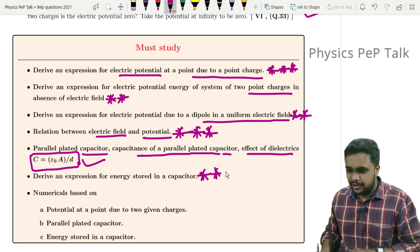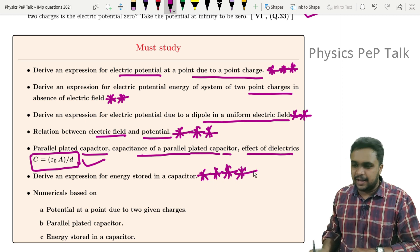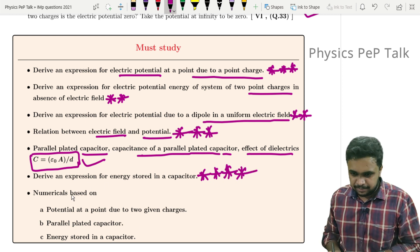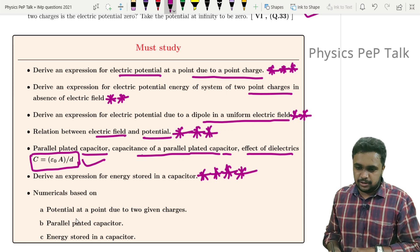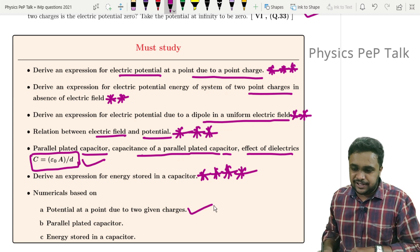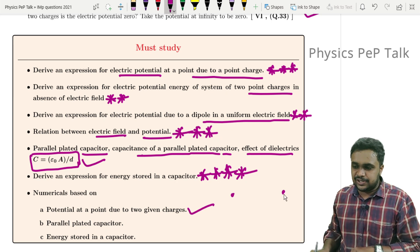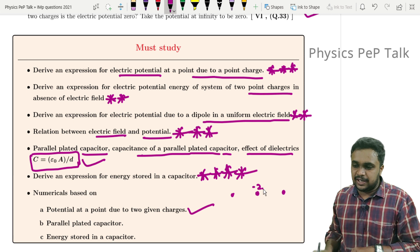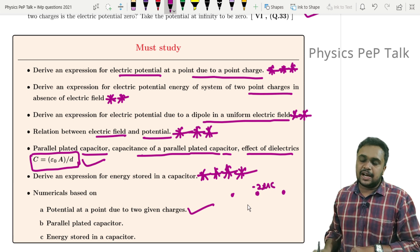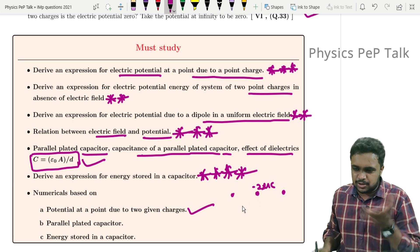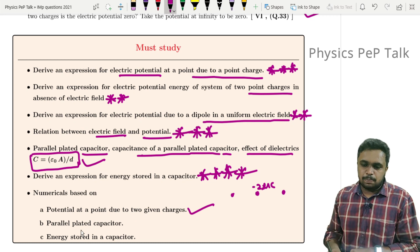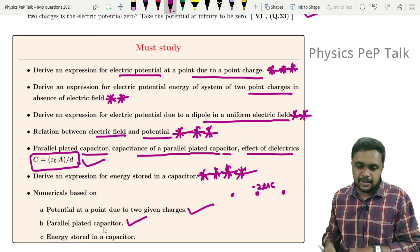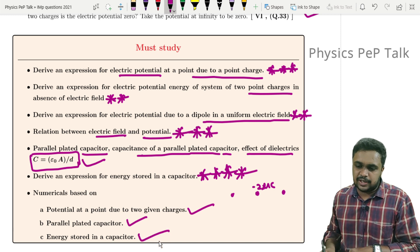Derive an expression for energy stored in the capacitor - this is very important, it was asked in model papers. Numericals will be based on potential at a point due to two point charges. One point charge here, one point charge there - what will be the potential at this point? What will be the potential if I place some charge of minus two microcoulomb? These types of questions will be asked.